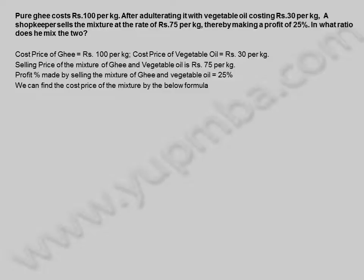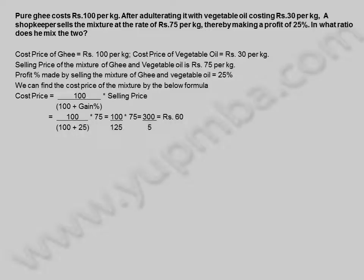We can find the cost price of the mixture by the formula: cost price = (100 / (100 + gain%)) × selling price = (100 / (100 + 25)) × 75 = (100 / 125) × 75 = 300/5 = 60 rupees.